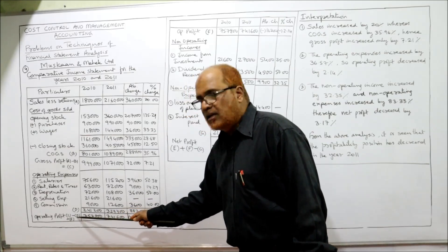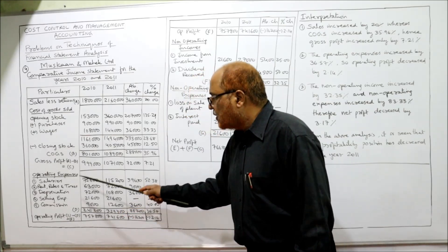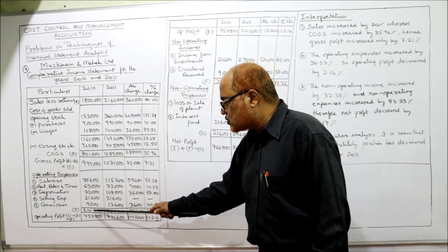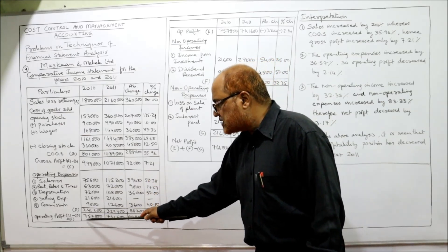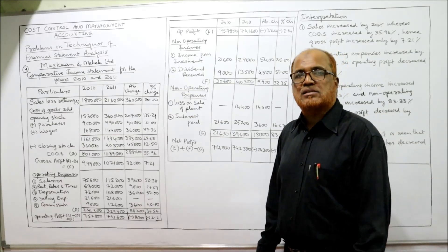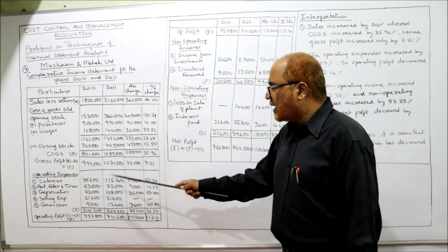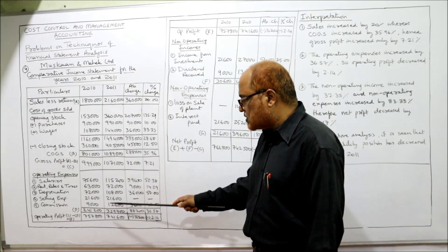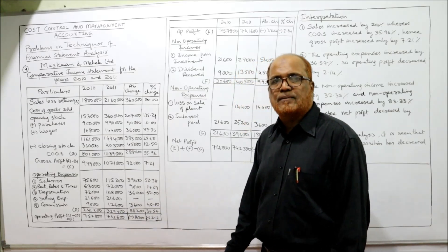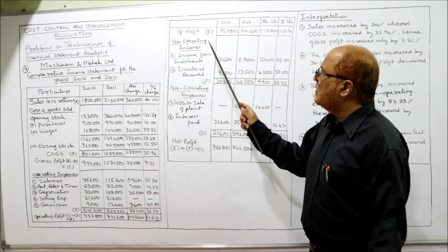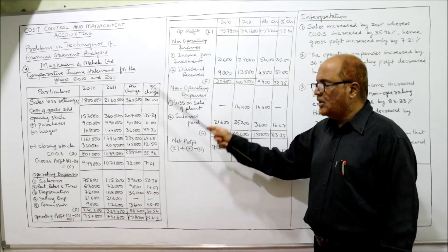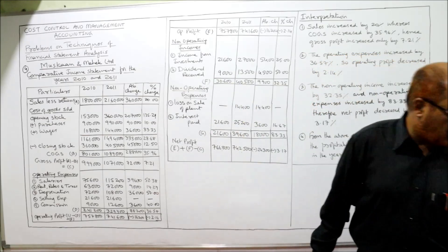Operating profit: 9,99,000 minus 2,41,200 equals 7,57,800 for last year. Current year: 10,71,000 minus 3,21,400 equals 7,41,600. Up to operating profit we have calculated. This is carried down and brought down on the statement, showing operating profit for both years.